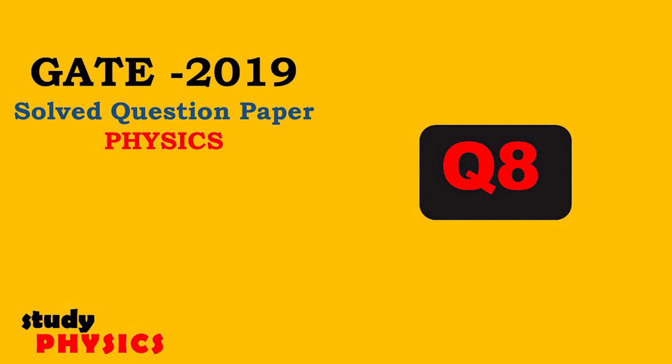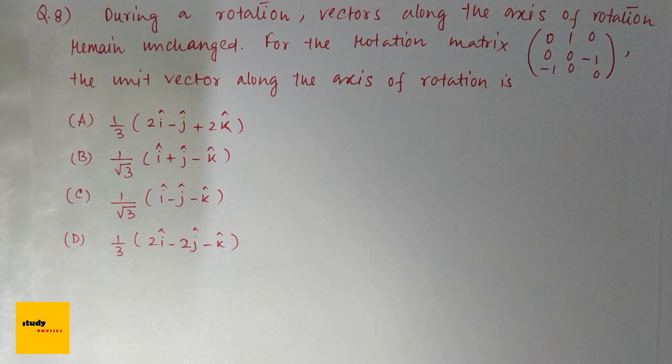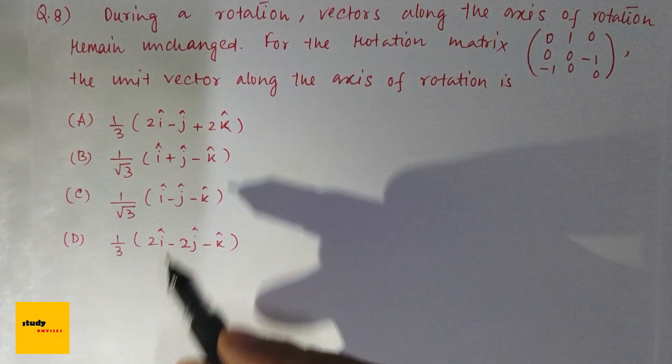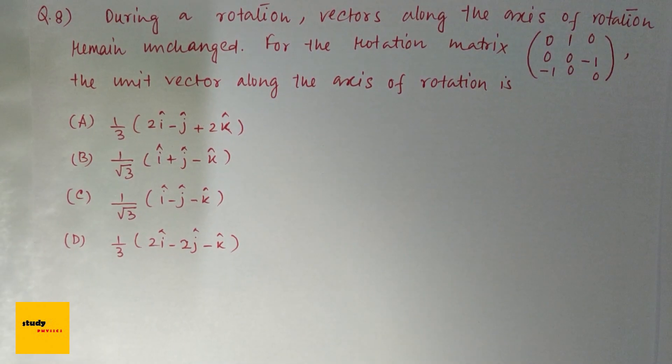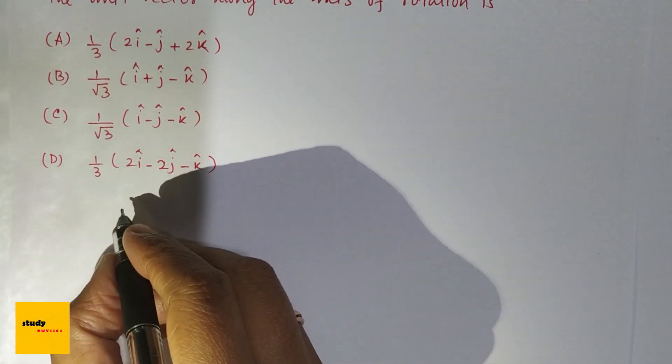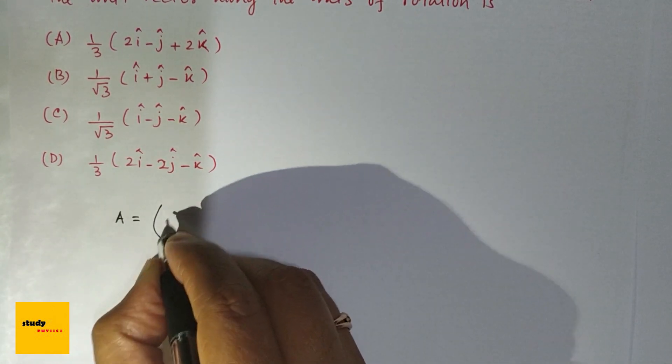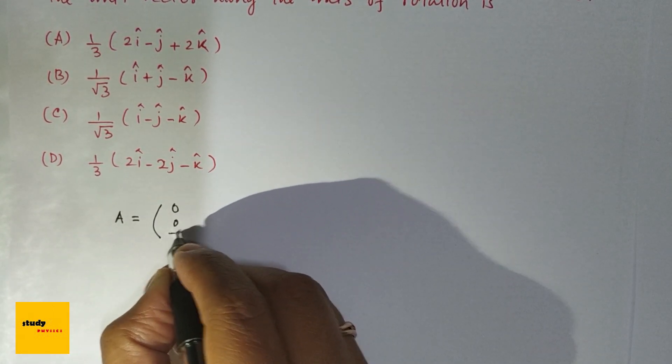Hi everyone, welcome to Study Physics. Here's question number eight: During a rotation, vectors along the axis of rotation remain unchanged. For the rotation matrix shown, the unit vector along the axis of rotation is... and these are the four options. Okay, so if this is our matrix A equal to (0, 0, -1)...